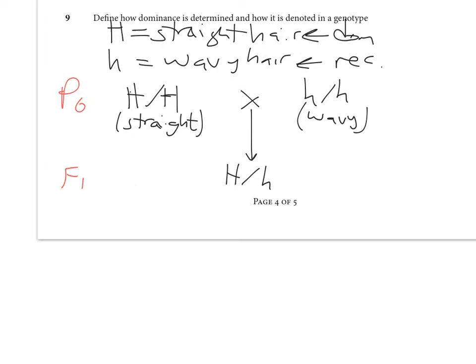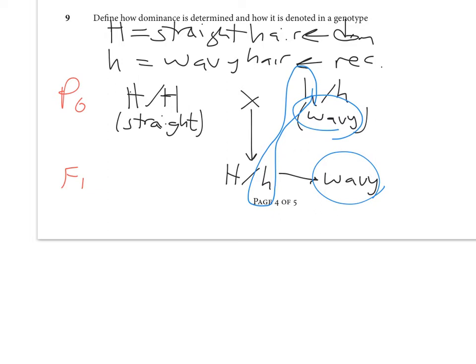All those F1 individuals are genetically identical, so they'll have one phenotype. If that phenotype is wavy hair, then lowercase h is dominant. If all the F1s are heterozygous and they all have wavy hair, that defines lowercase h as the dominant allele. The nomenclature is irrelevant — the fact is that when the phenotype matches the allele inherited from one parent, that allele is controlling the phenotype in the next generation.